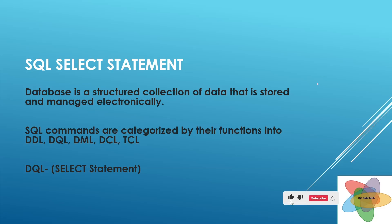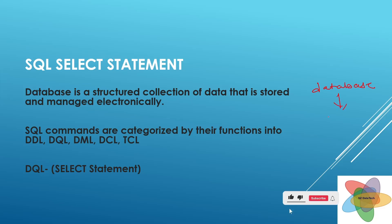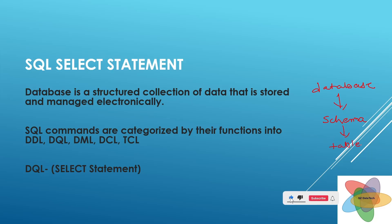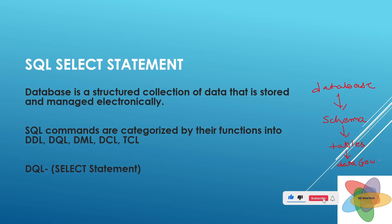A table consists of data which is logically organized in row and column format. So we can say there is a database having multiple schemas, which have multiple tables, which have data in row and column format.